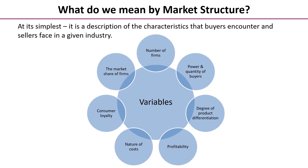Turning to the first part of the model — structure — market structure is a description of the characteristics that buyers encounter and sellers face in a given industry. We're thinking about both sides of the demand and supply diagram. There are seven features to work through. The first is the number of firms: some markets may have only one firm, others a few, and still others many.